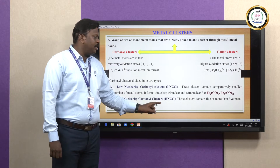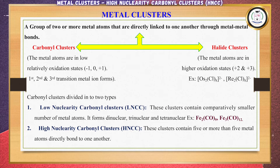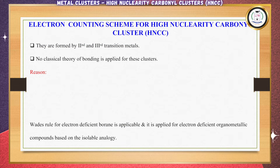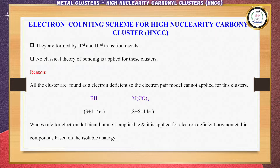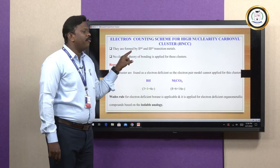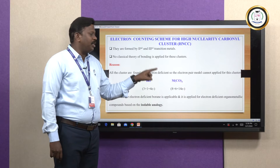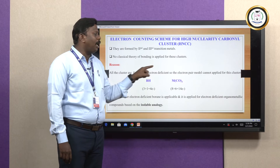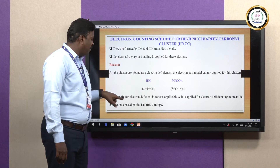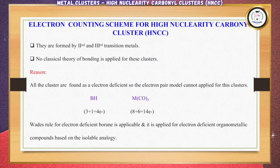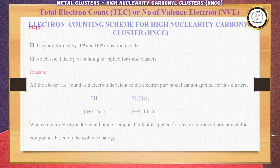In high-nuclearity carbonyl clusters, these clusters contain a minimum of five or more metal atoms directly bonded to one another. To understand the framework of high-nuclearity carbonyl clusters, we need to know the electron counting scheme, because no classical theory of bonding is applicable for these clusters. The reason is all the clusters are electron deficient, so the normal electron pair model cannot be applied. Wade's rule for electron-deficient boron is applicable, and the same is applied for high-nuclearity carbonyl clusters because of the isolobal analogy.